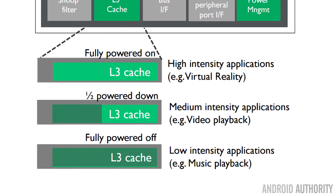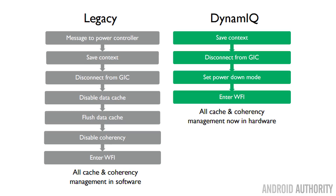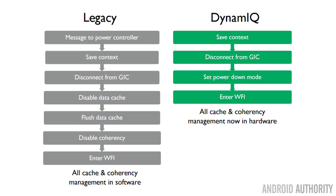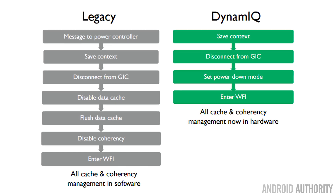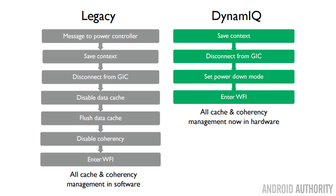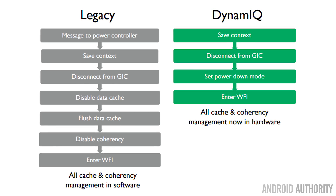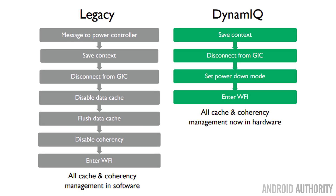Cache management is all controlled in software. And one last thing worth mentioning: because all CPU cores are now inside the same cluster, powering them down — switching them off so they use no power and don't drain your battery — is much easier than before. The number of steps required internally to do that has been halved. Previously it was mainly handled by software inside the Linux kernel, but now it's all handled in hardware, which means it is super efficient.